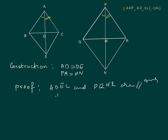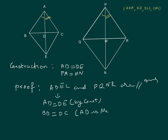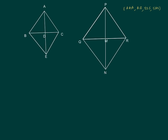So let us start with ABEC. Here we can see that AD = DE by construction, and BD = DC as AD is the median. Now since the diagonals are bisecting each other, ABEC has to be a parallelogram. Similarly, PQNR is a parallelogram as its diagonals also bisect each other.